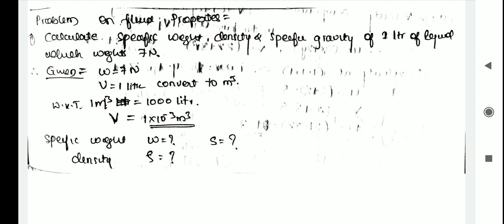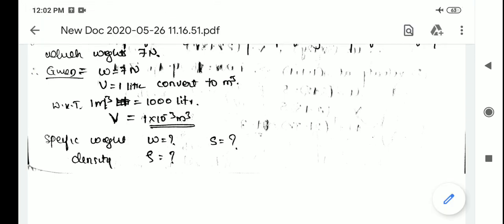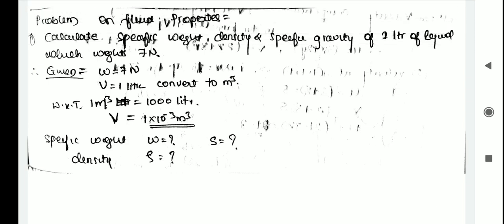First, density — or mass density — is the ratio of mass of the fluid to the volume of the fluid. The density of water is already known as 1000 kg per meter cube. Mass per unit volume is called density, denoted by rho, and its unit is kg per meter cube.